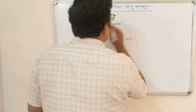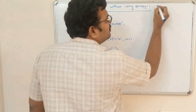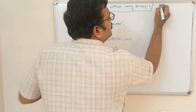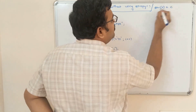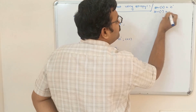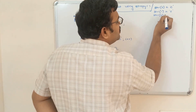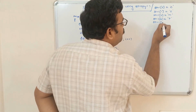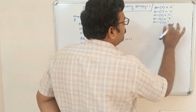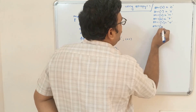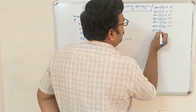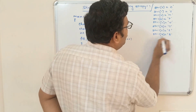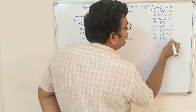Let us trace through the program so you can clearly understand. Here str1[20] = "computer", which means: str1[0]='C', str1[1]='O', str1[2]='M', str1[3]='P', str1[4]='U', str1[5]='T', str1[6]='E', str1[7]='R', and automatically str1[8]='\0'.